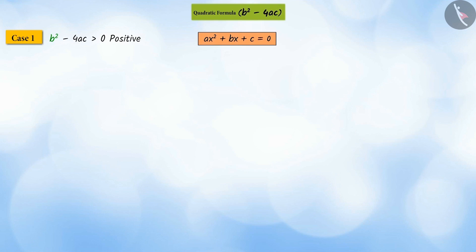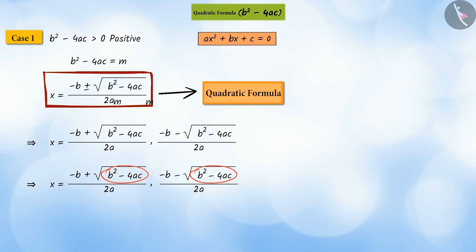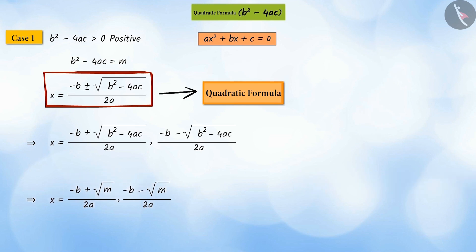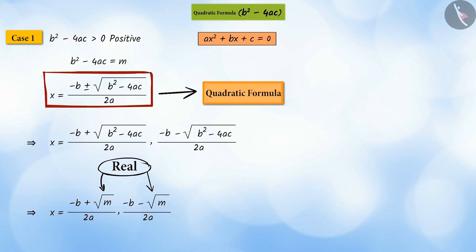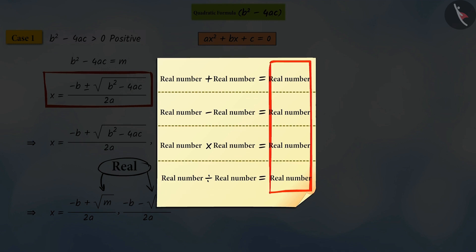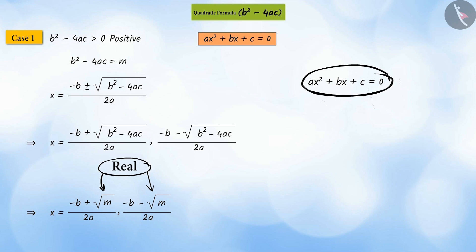In this quadratic formula, if the value of b squared minus 4ac is greater than zero, it is a positive number. Let's consider it m. In roots derived from the quadratic formula, let b squared minus 4ac be replaced with m. The square root of a real number will be a real number, and adding, subtracting, multiplying, or dividing any real number with a real number always gives a real number. So, b squared minus 4ac being greater than zero, that is being positive, means the quadratic equation will have two unequal real roots.